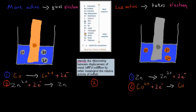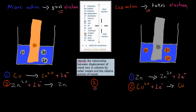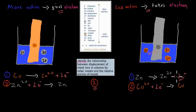The second dot point was to identify the relationship between displacement of metal ions in solution by other metals and the relative activity of metals, covered in video number two. Activity was all about taking and giving electrons. The more active metal is the one that gives electrons; the less active metal is the one that takes electrons. More reactive means more active; less reactive means less active. In this case, zinc is more active than copper, so zinc will give electrons to copper.